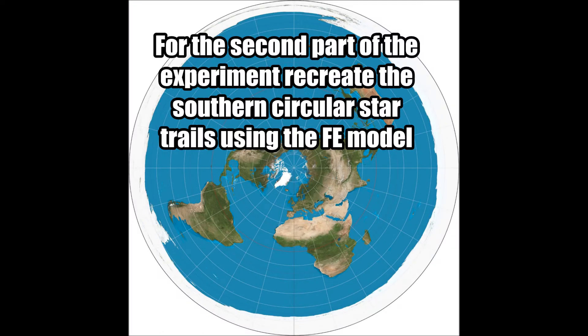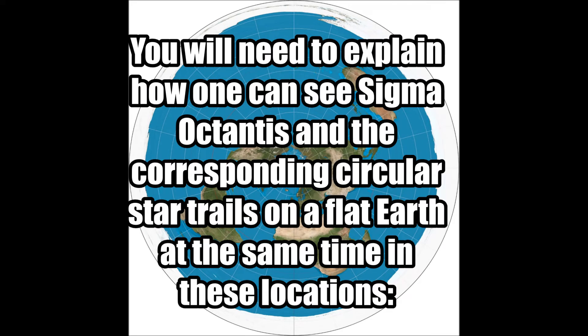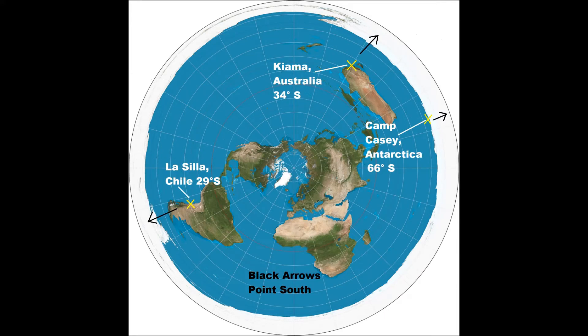Now for the second experiment: recreate the southern star trails using the flat earth model and explain how Sigma Octantis, the southern star, can be seen in three different locations on the flat earth. You will need to explain how one can see Sigma Octantis and the corresponding circular star trails on a flat earth at the same time from Kiamma, New South Wales, Australia (latitude 34 degrees south), Camp Casey, Antarctica (66 degrees south), and La Silla Observatory, Chile (29 degrees south). You must also explain the corresponding angles of the south star with each of the three locations.